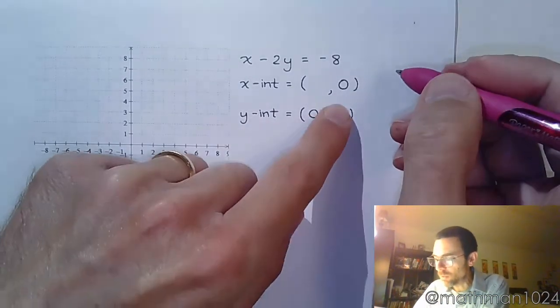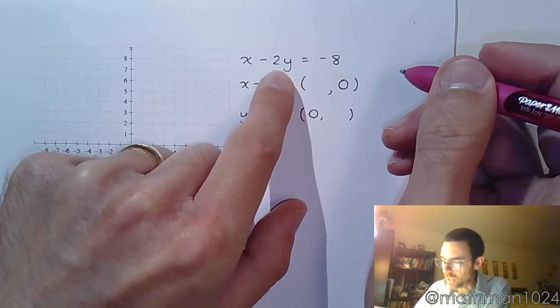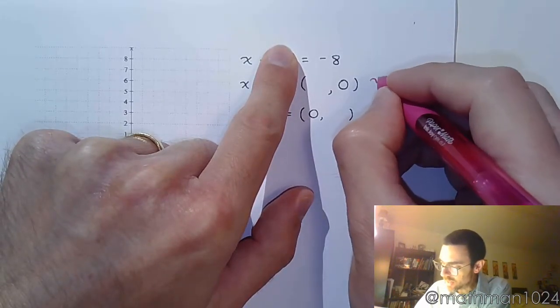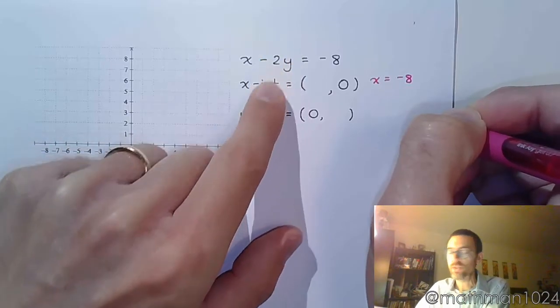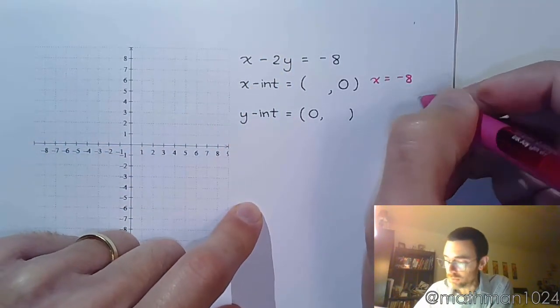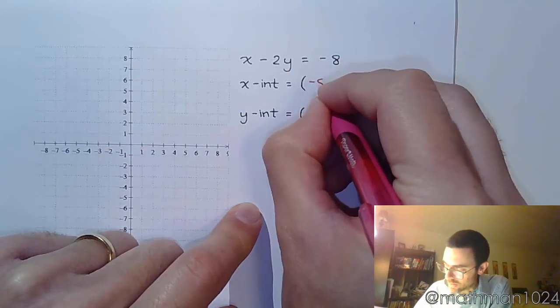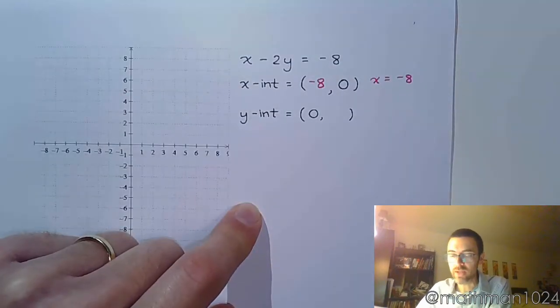So if y is 0, we cover this up and we see that x is equal to negative 8. That's already done for us, we don't need to solve for x. So x is negative 8, negative 8 comma 0.